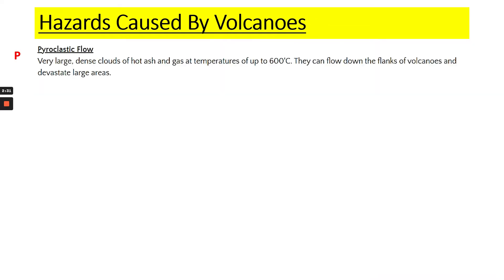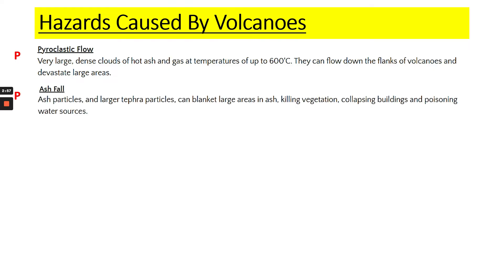In terms of volcanoes, there are a number of primary and secondary impacts as a result of a volcanic event. Pyroclastic flow, for example, is large dense clouds of hot ash going down a mountainside, mainly from composite volcanoes. They are very hot — around 600 degrees Celsius — very fast, a couple of hundred miles per hour, and they can devastate whole areas.